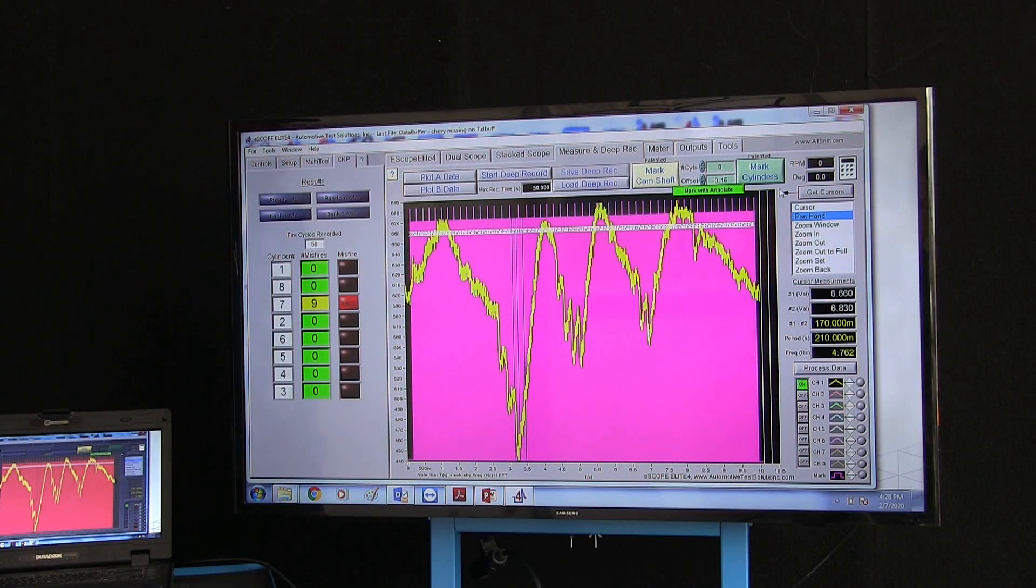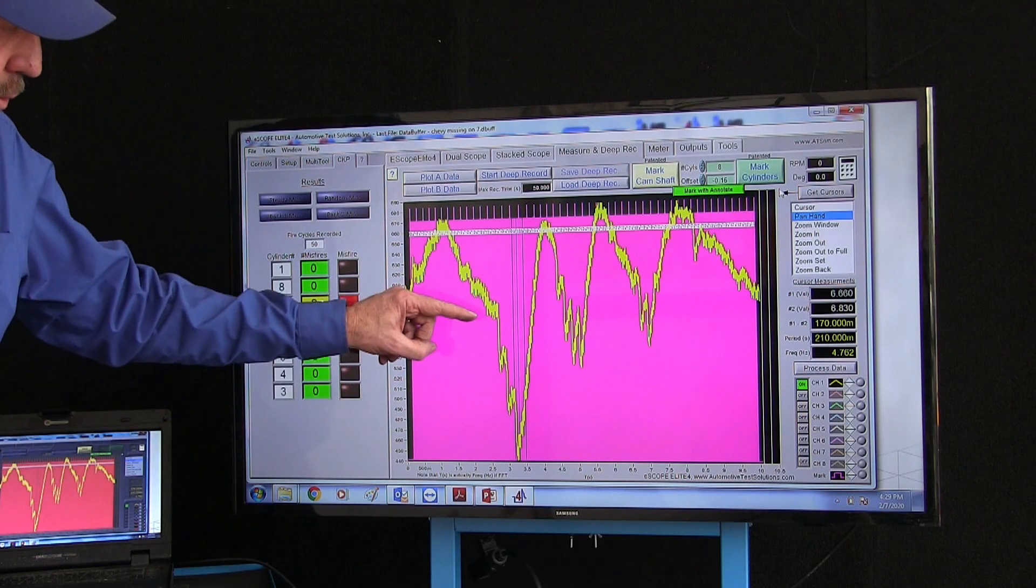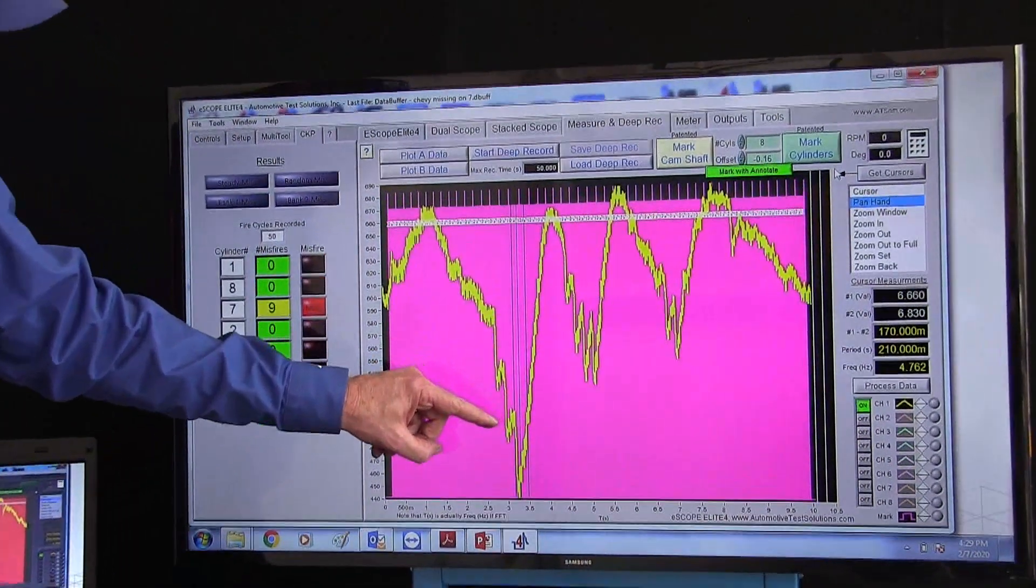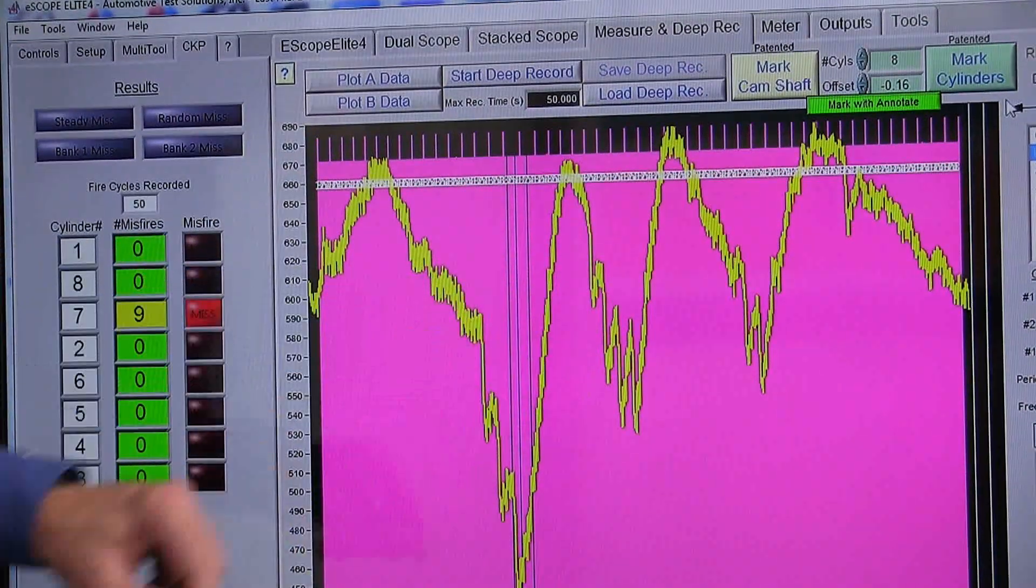Now the analyzer has indicated cylinder seven has nine misfires after 50 recorded fire cycles. As we can see each drop here is a misfire. These are all misfires.